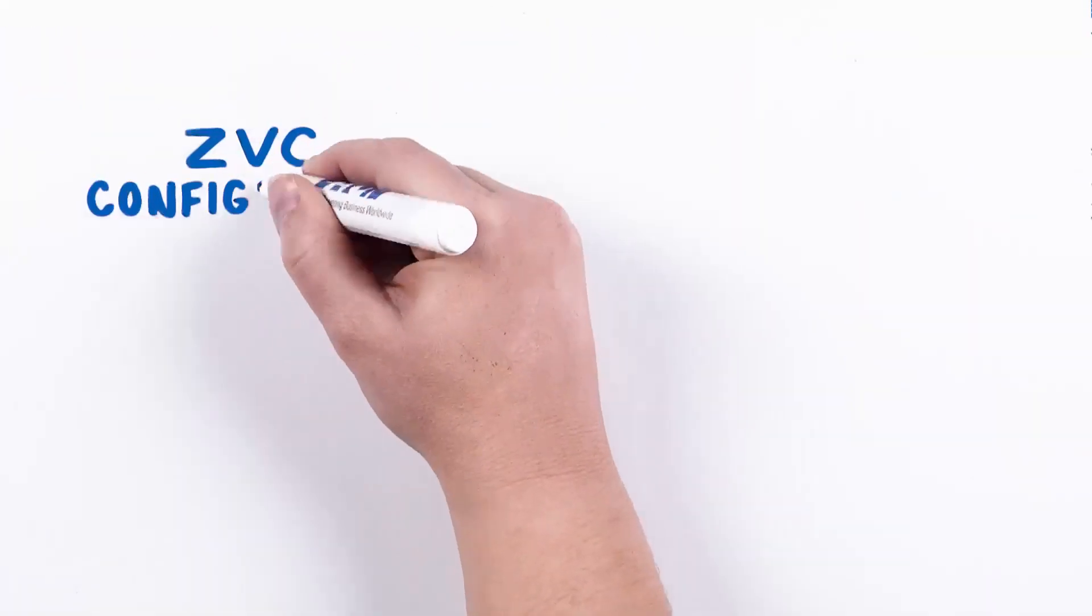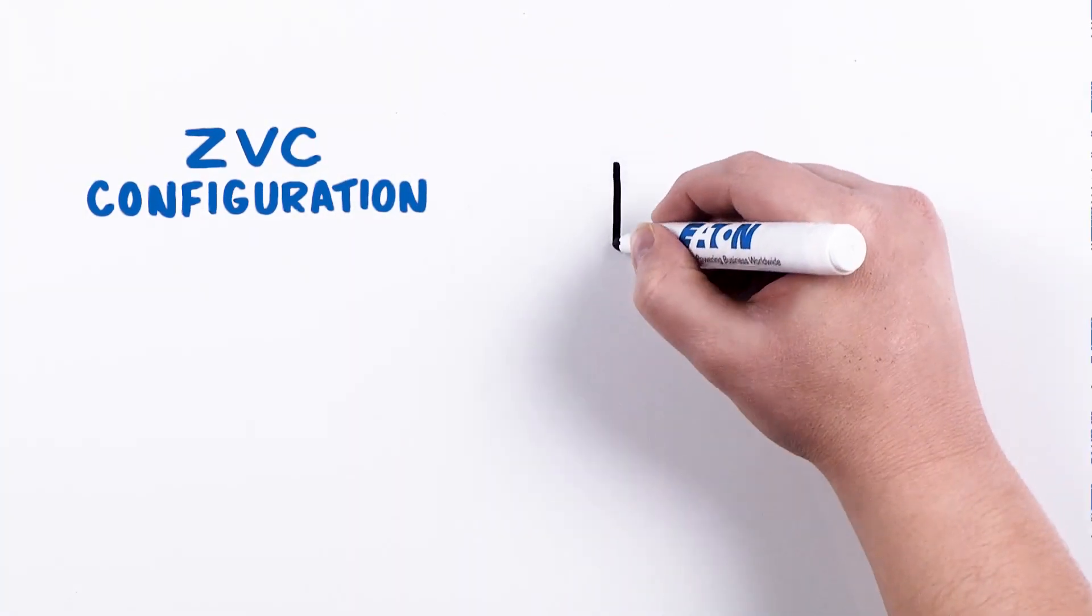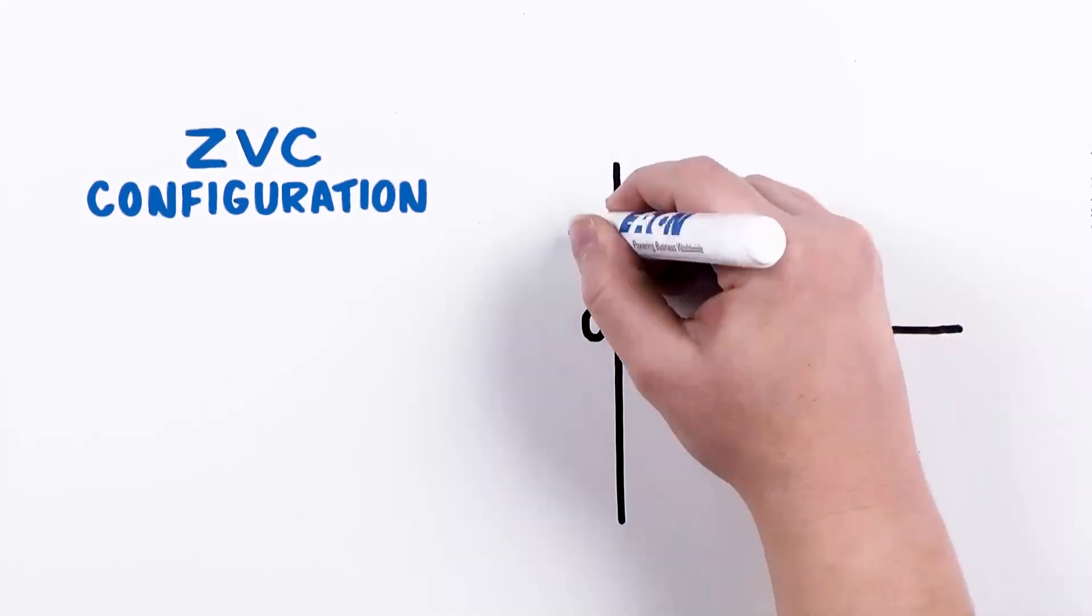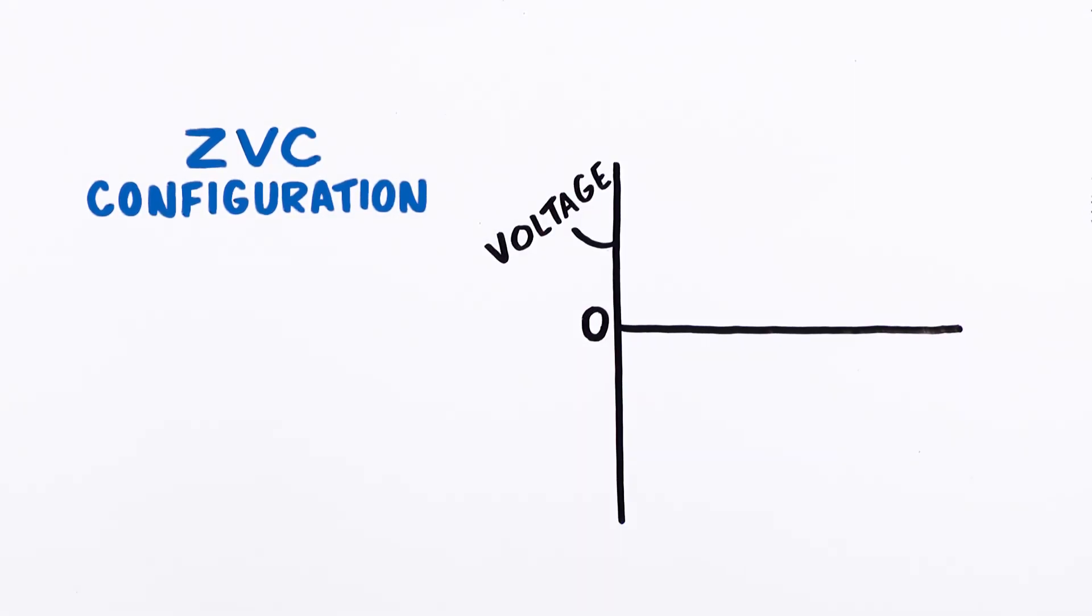The ZVC configuration monitors system voltage, closing each phase as it crosses zero voltage to minimize resultant transients.